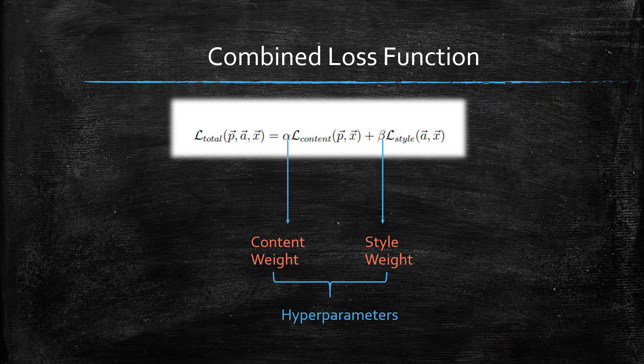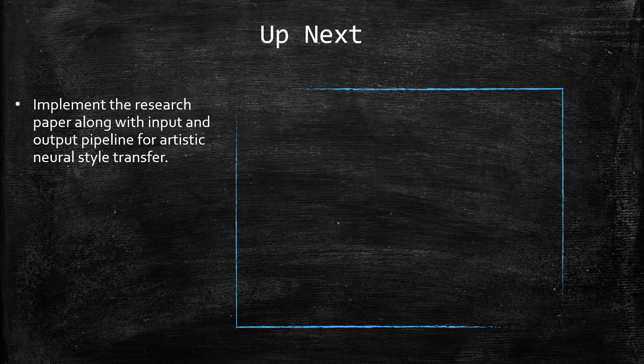We combine the loss functions as: alpha times content loss plus beta times style loss. Alpha and beta are called the content weight and style weight and are hyper-parameters. If content weight is kept very high, more preference is given to content and less style is applied. If style weight is higher, more style is applied and content fidelity is reduced.